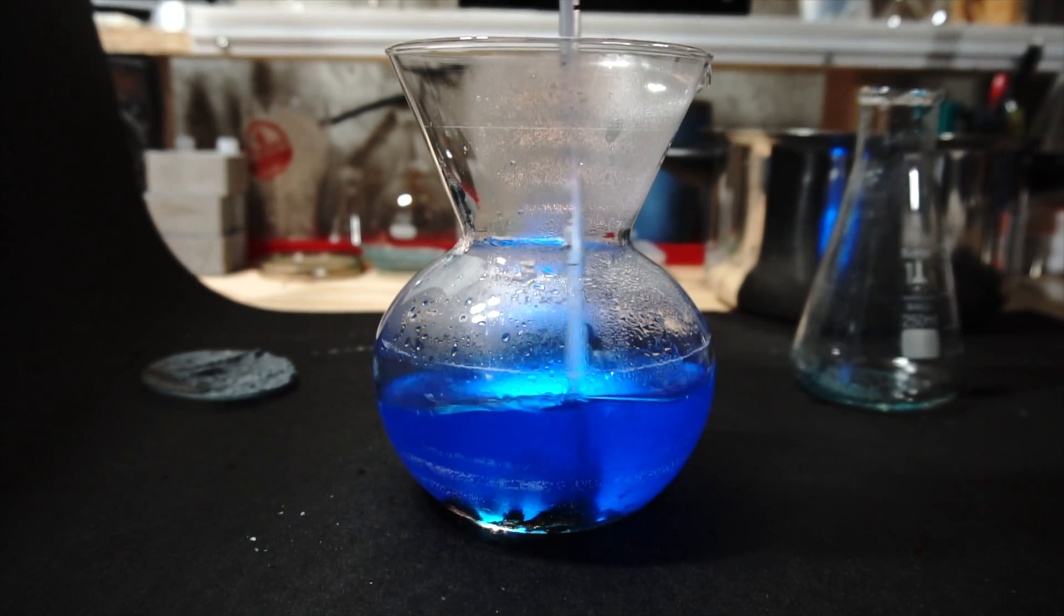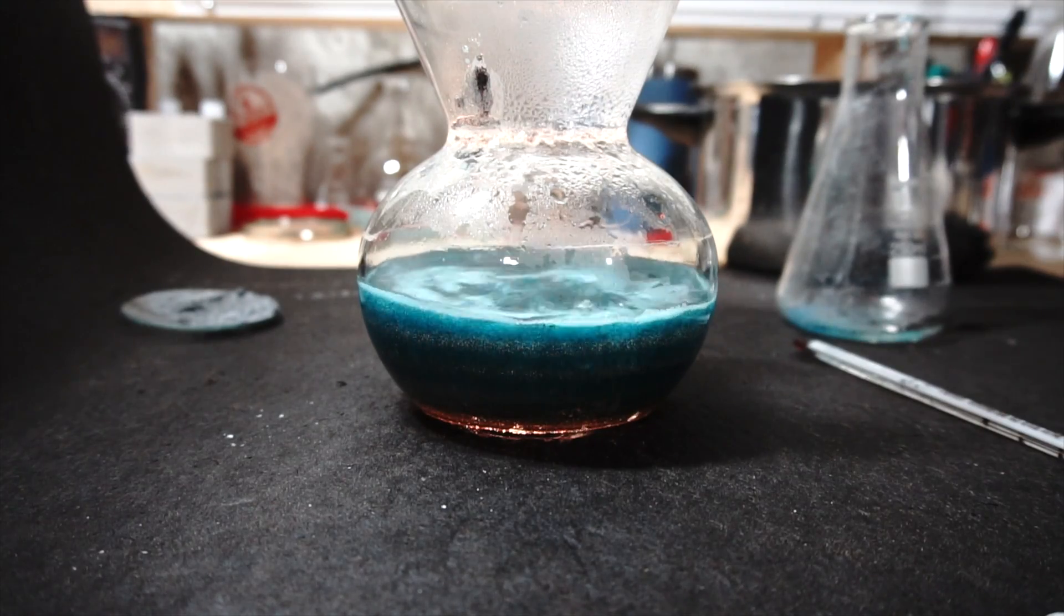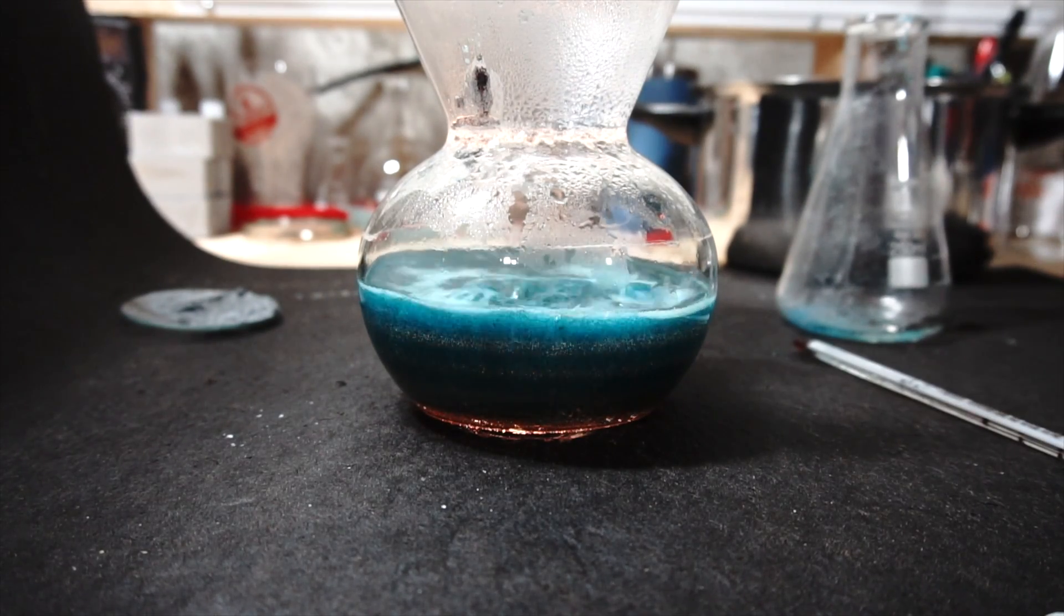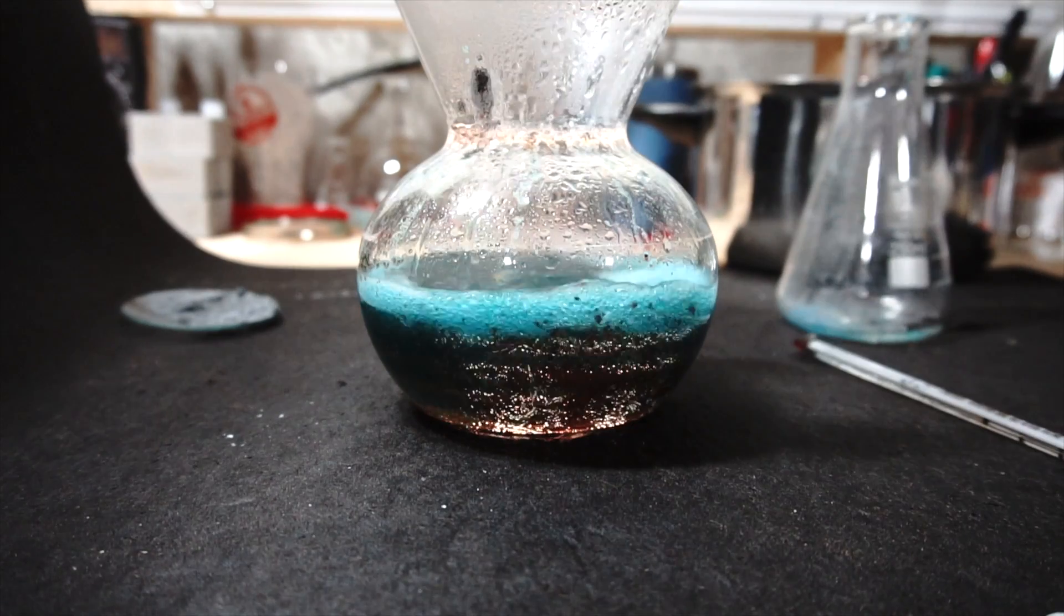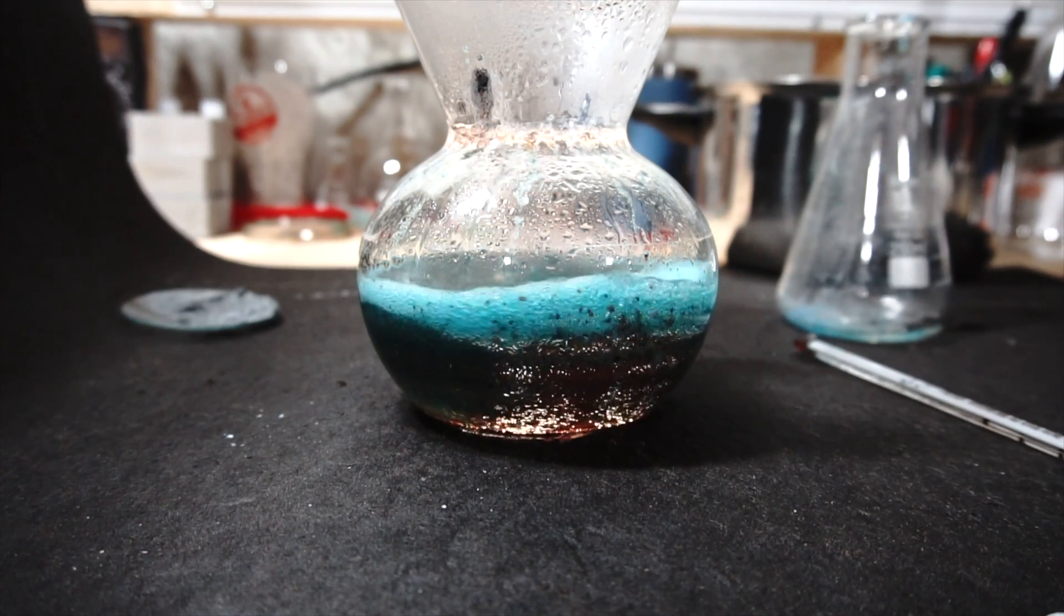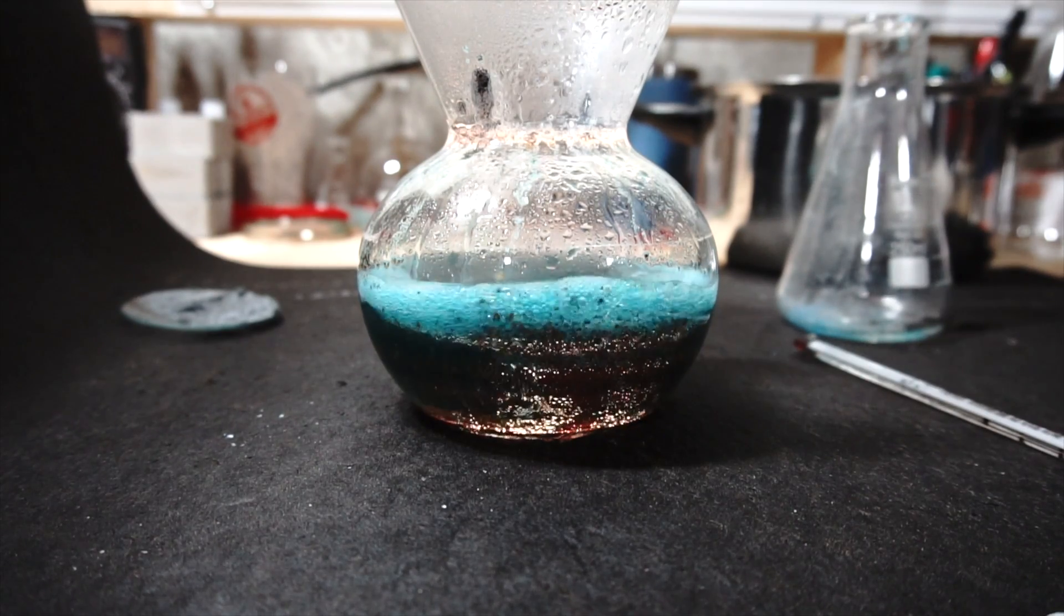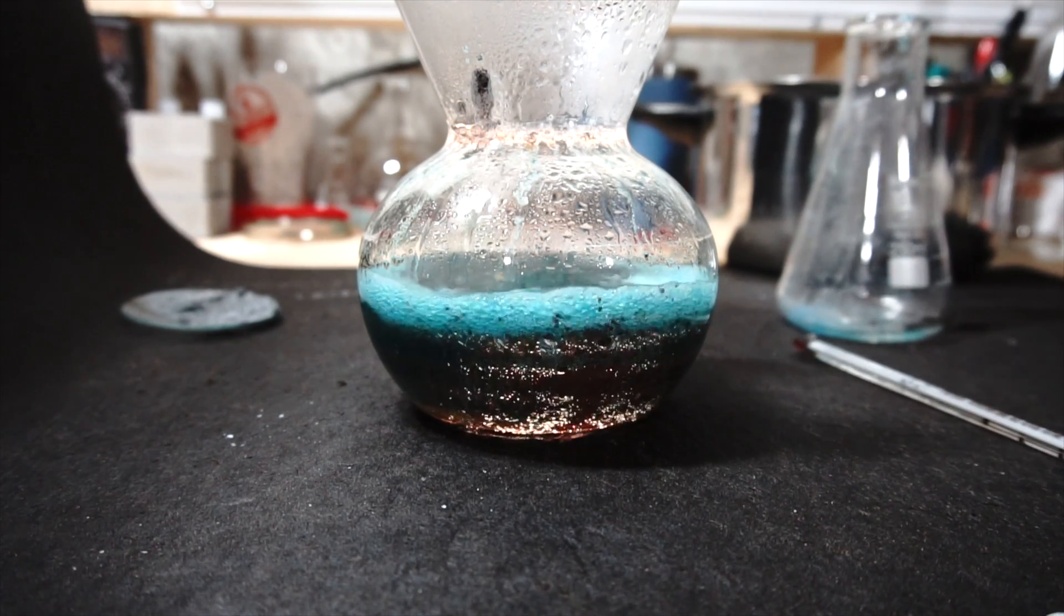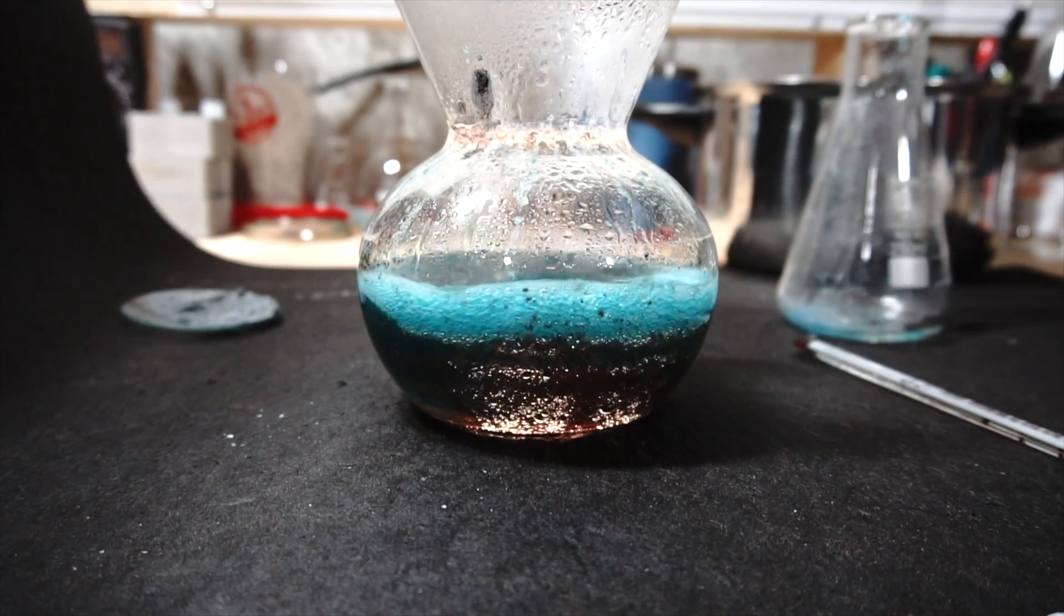Now, what's happening in this reaction is the copper sulfate is being attacked by the zinc metal. The zinc is essentially ripping the sulfate ion off of the copper and taking it for itself, which leaves copper to settle out of the solution. And you'll notice it's this nice rust color you see at the bottom of the flask.